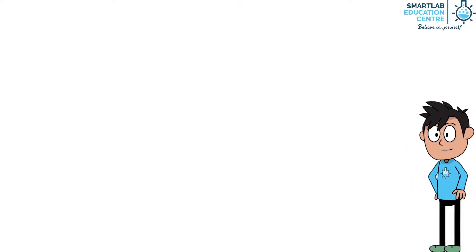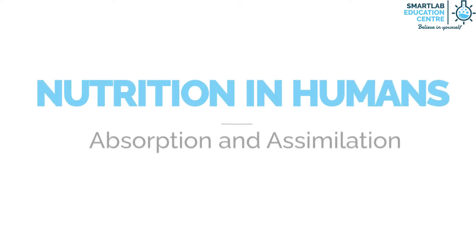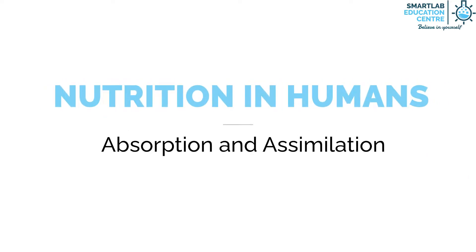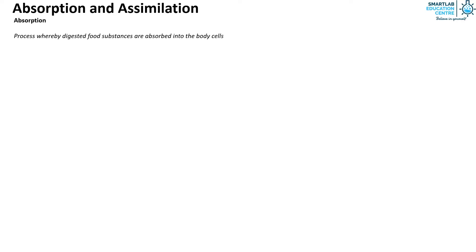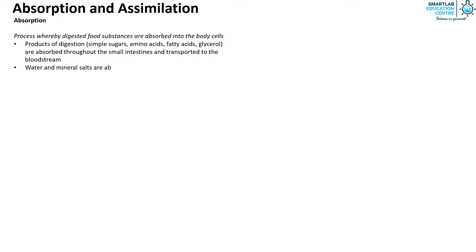Welcome back everyone. Today we learn about absorption and assimilation, starting with absorption. Absorption is the process whereby digested food substances are absorbed into the body cells. The products of digestion, such as simple sugars, amino acids, fatty acids, and glycerol, are absorbed throughout the small intestine and transported to the bloodstream. Water and mineral salts are also absorbed by the small intestine and colon.